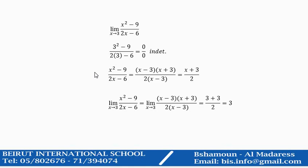In this case, as we said earlier, you factorize. It will be x minus 3 into x plus 3 over 2 into x minus 3. The x minus 3 can be eliminated from both numerator and denominator. We end up with x plus 3 over 2.